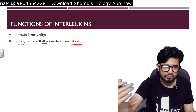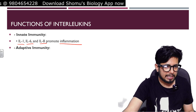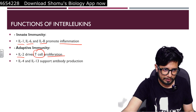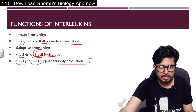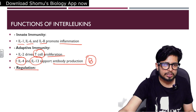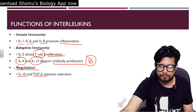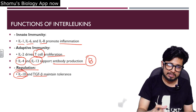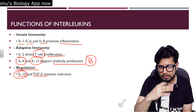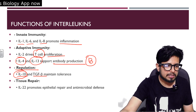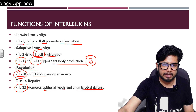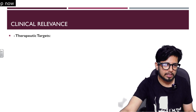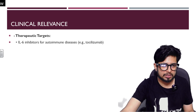In terms of functions: for innate immunity, IL-1, IL-6, and IL-8 promote inflammation as pro-inflammatory cytokines. For adaptive immunity, IL-2 drives T cell proliferation, while IL-4 and IL-13 support antibody production by stimulating B cells. For regulation, IL-10 and TGF-beta (transforming growth factor beta) maintain tolerance and prevent further immune activation. For tissue repair, IL-22 promotes epithelial repair and antimicrobial defense.